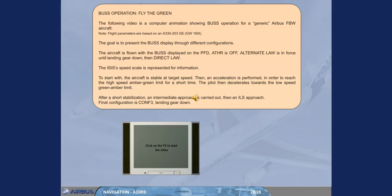To start with, the aircraft is stable at target speed. Then an acceleration is performed in order to reach the high-speed amber-green limit for a short time. The pilot then decelerates towards the low-speed green-amber limit. After a short stabilization, an intermediate approach is carried out, then an ILS approach. Final configuration is CONF 3, landing gear down.